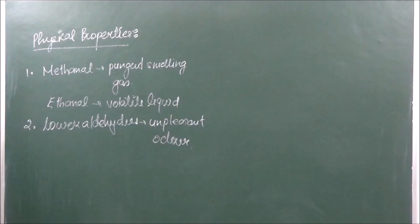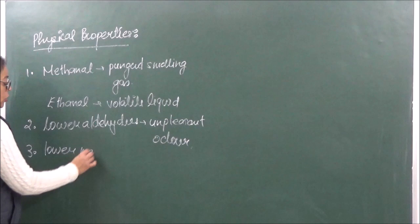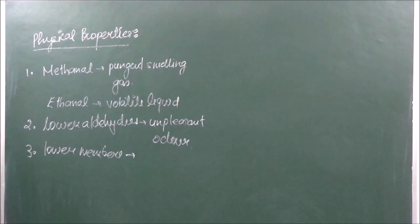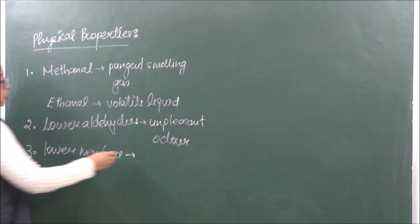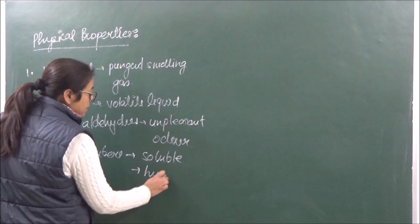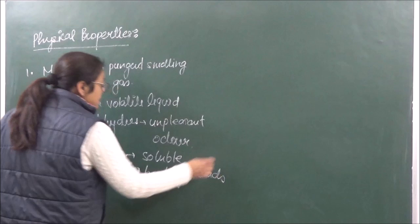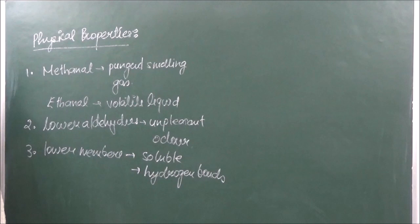The third physical property is solubility. The lower members up to 4 carbon atoms are soluble in water due to the presence of hydrogen bonds. As the number of carbon atoms increases, the solubility in water keeps on decreasing.